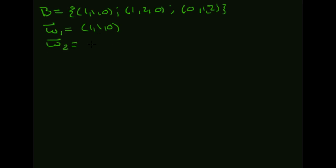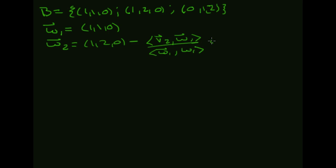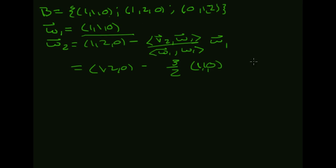W2 is going to be (1, 2, 0) minus ⟨V2, W1⟩ over ⟨W1, W1⟩ times W1. That fraction works out to be 3/2, and W1 is (1, 1, 0), so this comes out to be (−1/2, 1/2, 0). These two vectors are, in fact, orthogonal — if you take the dot product, you get 0.